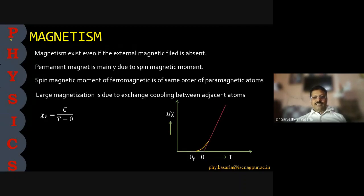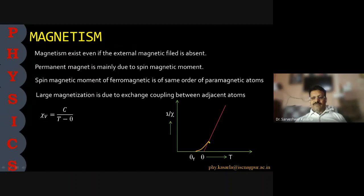Here is the graph between one upon susceptibility versus temperature. As the temperature increases, the susceptibility decreases. The yellow line indicates the behavior of ferromagnetic material, while the dotted line shows the paramagnetic behavior. We will see the difference between paramagnetic and ferromagnetic material through domain theory.